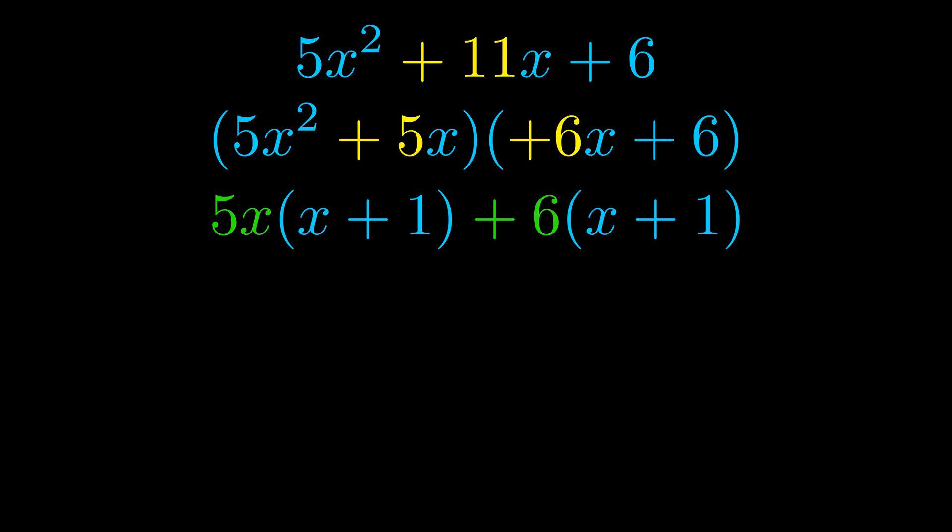Notice also how what remains inside of the parentheses is the same in both cases. The blue values are the same. Those blue values will become one of our factors and we will combine the two green values, the GCFs that we pulled out, to get the other one. And that is our fully factored equation.